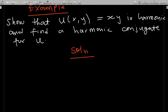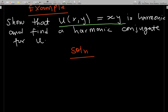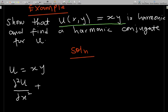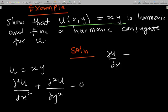Show that u(x, y) = x·y is harmonic and find a harmonic conjugate for u. So u is equal to x·y. We are supposed to show that this is harmonic, meaning we need to show that ∂²u/∂x² + ∂²u/∂y² = 0.